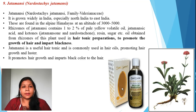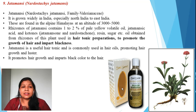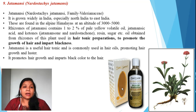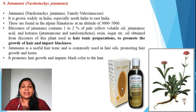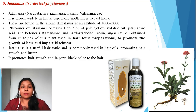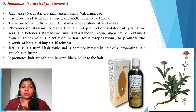The ninth ingredient is jatamansi, belonging to the family Valerianaceae. The botanical name is Nardostachys jatamansi. It is grown widely in India, generally in northern and eastern India, and is mainly found in the alpine Himalayas at altitudes of 3,000 to 5,000 meters. The rhizomes of jatamansi are pale yellow and yield a pale yellow volatile oil. Jatamansi acid and ketones are the main active constituents. The rhizomes find application in hair tonic preparations to promote hair growth and impart blackness, maintaining the natural black color of hair.